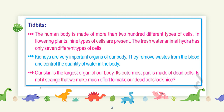Our topic for today is organisms. To start, we will first discuss a tidbit of interesting information: the human body is made of more than 200 different types of cells. In flowering plants, nine types of cells are present.